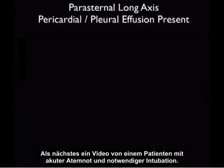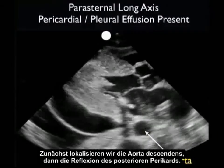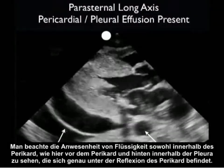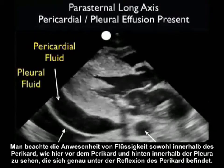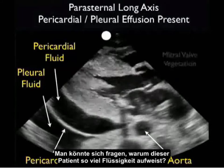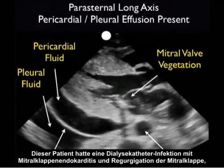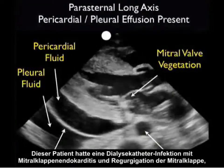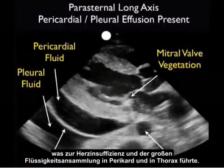Next we'll look at a video clip from a patient who presented with acute shortness of breath requiring intubation. First, we'll identify the descending aorta, then the posterior pericardial reflection. Note here the presence of fluid both within the pericardial sac, layering anterior to the pericardium, and posteriorly within the pleural cavity, layering out just below the pericardial reflection. Looking closely at the mitral valve, we see a calcified vegetation on the posterior mitral valve leaflet. This patient had an infected dialysis catheter with mitral valve endocarditis, developing wide open mitral valve regurgitation resulting in heart failure and fluid layering within the pericardium and the thoracic cavity.